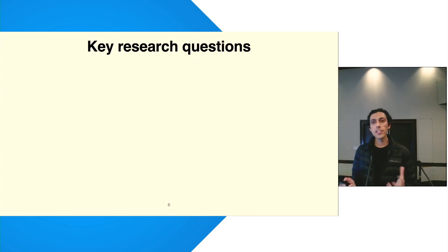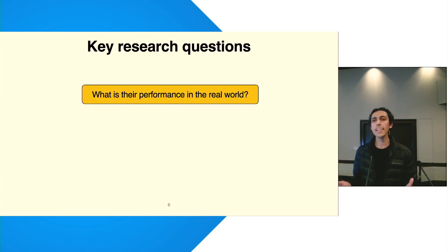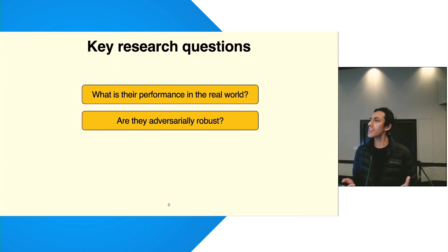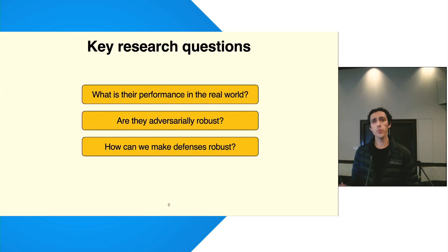With this in mind, we asked three key questions in our paper with regards to these defenses. First of all, what is their performance in the real world? We just saw they have very high performance on their test sets, but those test sets are from the exact same distribution as the training data, whereas in the real world, data can be from different distributions, say, from a different language model, and the performance of these defenses in these scenarios is unknown. Secondly, are they robust against adversarial attacks? We find that most defenses do not generalize well, nor are they robust, which makes us ask: can we make these defenses more robust? In this regard, we take a deeper look at FAST, which is one of the most promising existing defenses, and suggest some ways moving forward.